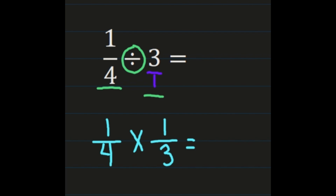Then we're simply multiplying fractions. Numerator times numerator: one times one is one. And denominator times denominator: four times three is twelve. So our final answer is one-twelfth.